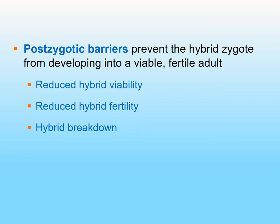Hybrids can be viable or they may not be viable. The barriers under this category include: first, reduced hybrid viability — the offspring is not going to survive very long; second, reduced hybrid fertility — the hybrid can survive long enough to mature but may not be fertile; and third, hybrid breakdown — a hybrid could form and produce offspring, but after successive generations over time it starts to break down, becoming less and less fertile.